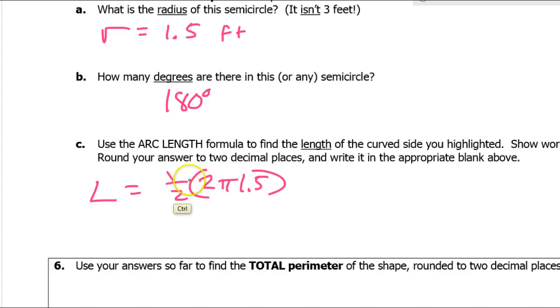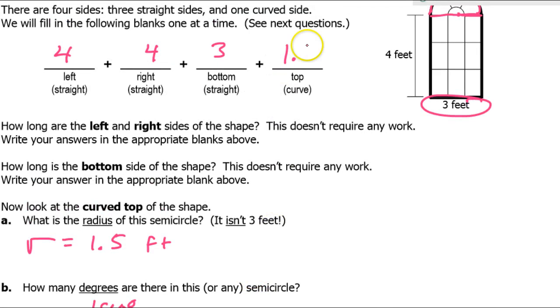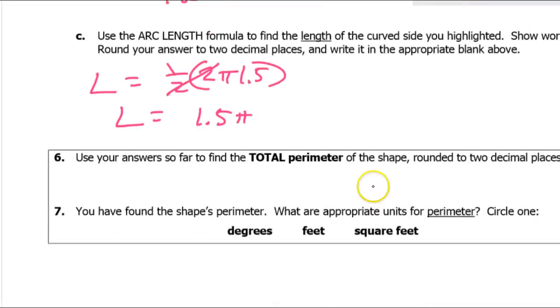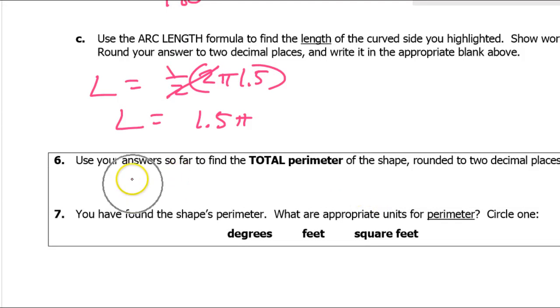Notice how the twos are going to cancel each other out. The one half and the two. So this little length is going to be one point five pi. I don't want any crazy decimals that I have to round yet. So I'm just going to leave it one point five pi. So I just have to add all of these up. So four plus four plus three plus one point five pi. Correct. Fifteen point seven one.